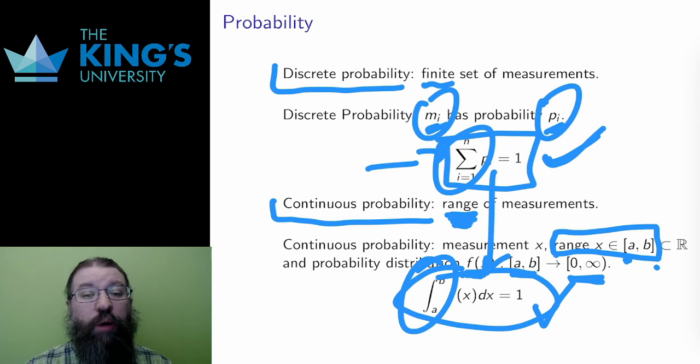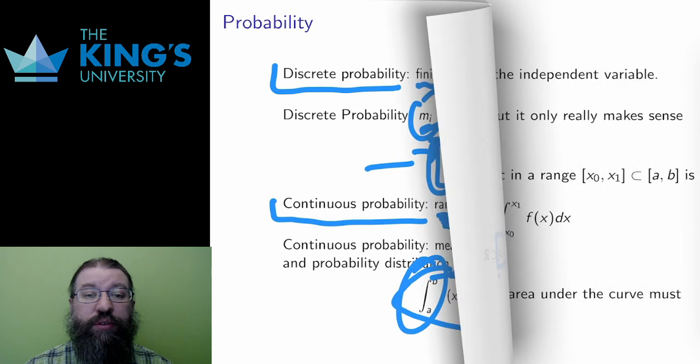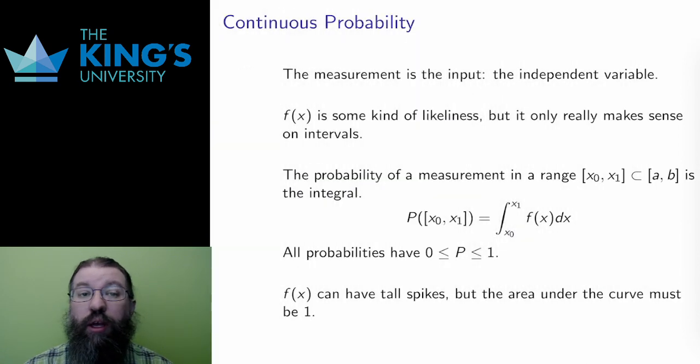This function is called a probability density function, or a probability distribution. I'll mostly refer to these functions simply as distribution throughout the videos this week. So I have a range of measurements, and a distribution f such that the integral of f over that range of measurements is 1.